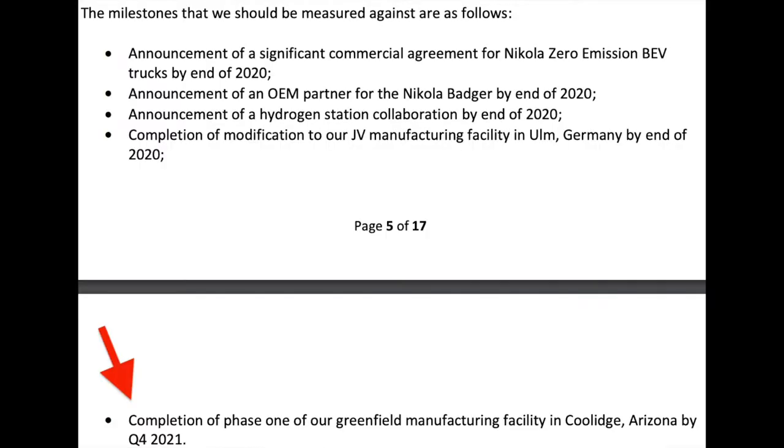On the screen you could see the five milestones and the first four I think are good and important. You want to keep track of those. If you want to pause the video and read through them, go ahead and do that now. But the main one that I want to focus on is the bottom one: completion of phase one of our greenfield manufacturing facility in Coolidge, Arizona by Q4 of 2021. This is the most important one because this is when they're going to start generating revenue.